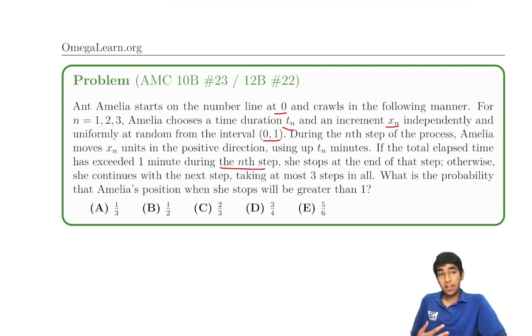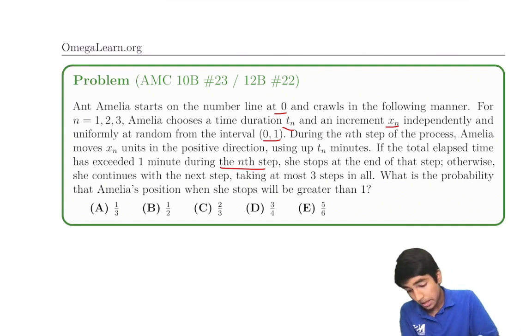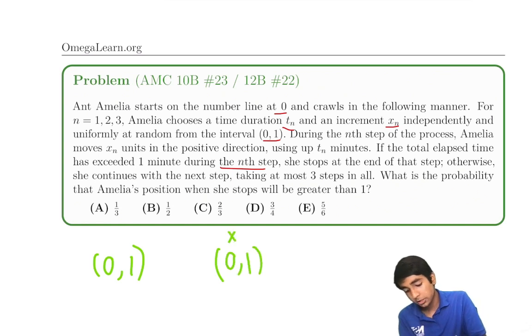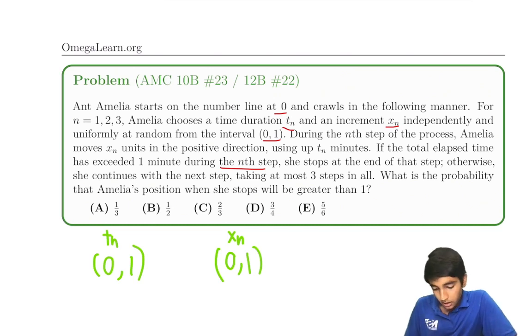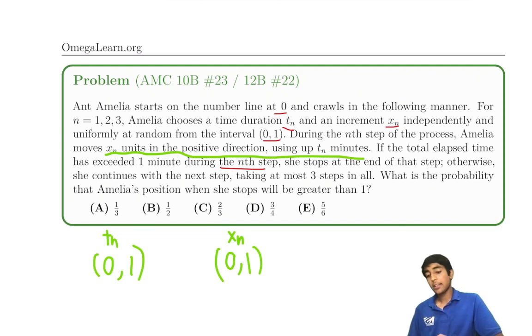Let's just break down what this is because it's a mouthful of a problem so far. Basically, t_n is the time we're taking, chosen randomly from 0 to 1. And this increment x_n is how much Amelia the ant is moving forward. So this is x_n, how much the ant moves forward, and t_n, how much time that will take. As you can see here, if the total elapsed time has exceeded a minute, so if it's already more than a minute, Amelia will stop. Otherwise, she continues with the next step, taking at most three steps in total.